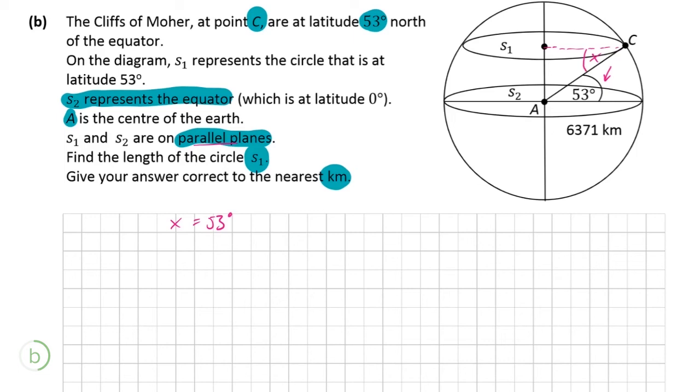Which means that because this is a right angle again where S1 and S2 is perpendicular to the line S1C we can basically get a relationship here involving cosine whereby we can say that cos 53 degrees is equal to R over 6,371 because the radius R of S1 up here in the diagram is adjacent to the angle and 6,371 is the hypotenuse which is opposite the right angle close to S1 as well.